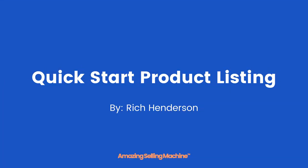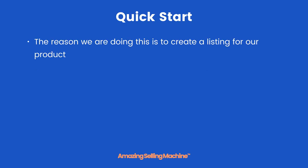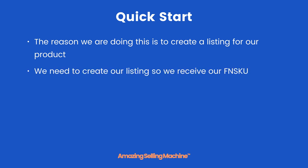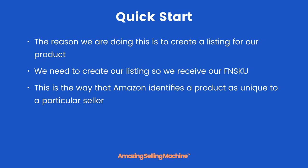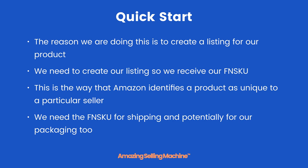In this quick start lesson, you're going to learn how to set up a basic product listing before you even receive your inventory. The reason we are doing this is to create a listing for our product so we receive our FNSKU number. This is the way that Amazon identifies a product as unique to a particular seller, and we need the FNSKU for shipping and potentially for our packaging too.